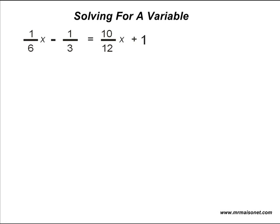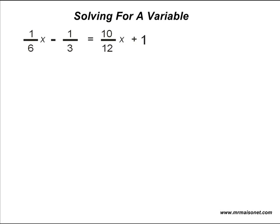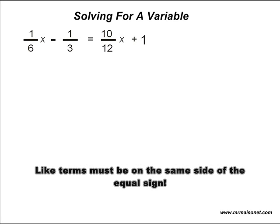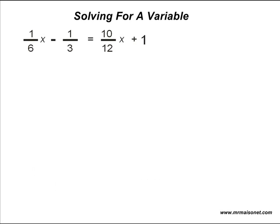In the equation 1 sixth x minus 1 third is equivalent to 10 twelfths x plus 1, we must isolate the x variable so we can figure out what its value is. There are a few different ways we can begin this problem, but we shall start by combining the negative 1 third with positive 1 on the opposite side of the equal sign. Before combining like terms, we must make sure both terms are on the same side. We move negative 1 third to the right by doing the opposite operation.